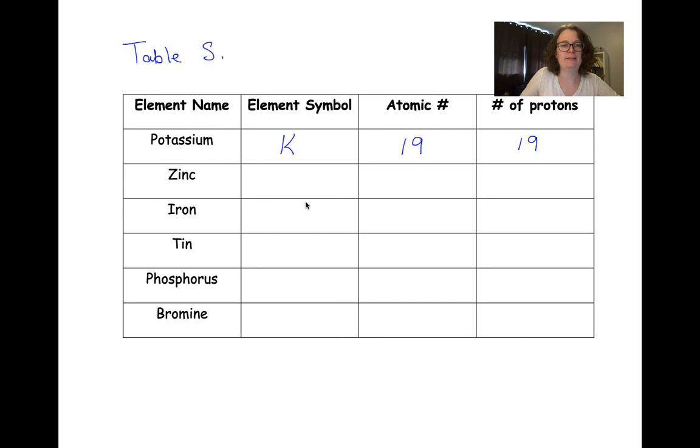Then we can find zinc. Its element symbol is going to be Zn, like capital Z, lowercase n, and its atomic number is 30, which means it has 30 protons in its nucleus.